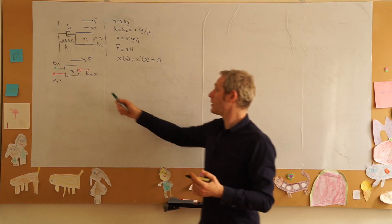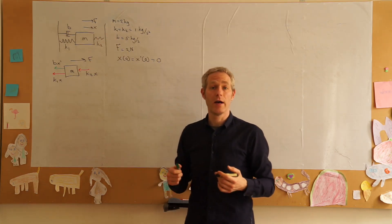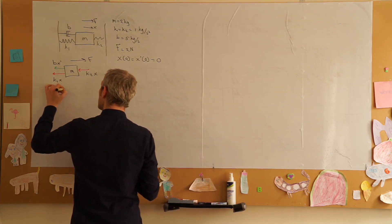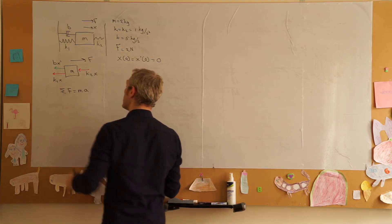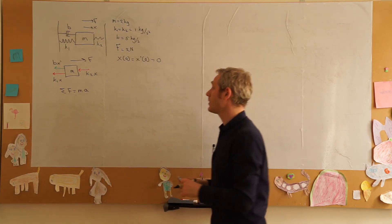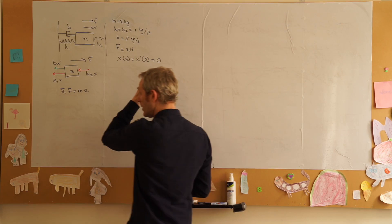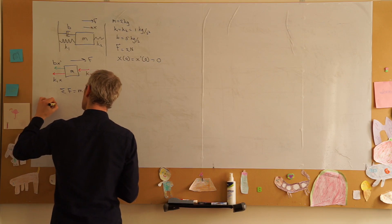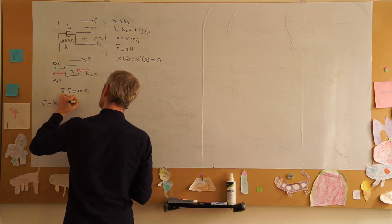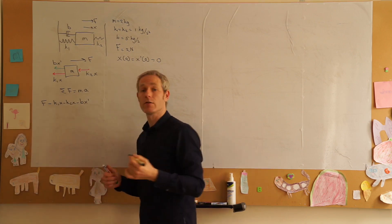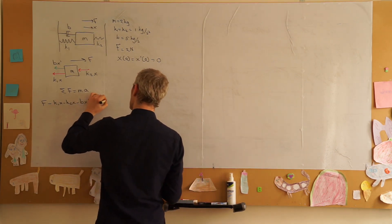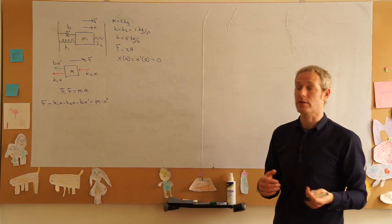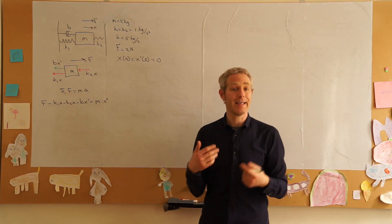Now because we have a free body diagram and our axis set up, we need the equations of motion. We have that the sum of all the forces equals m times acceleration. We can write out the forces: F minus k1 x minus k2 x minus b x prime equals m times the second derivative of our displacement because that is our output variable. We'll turn it into a differential equation in x.